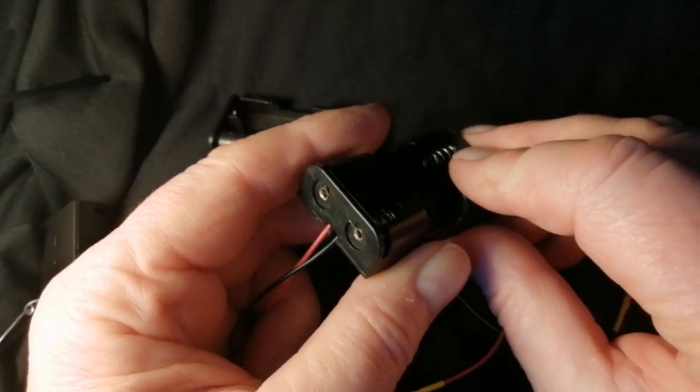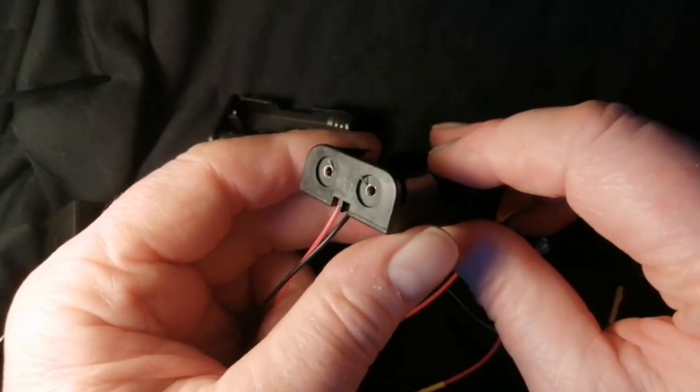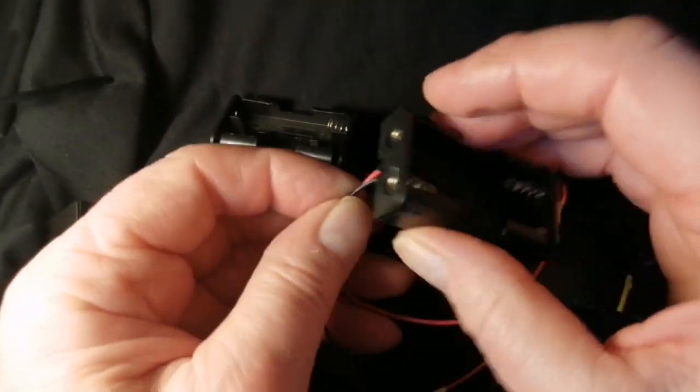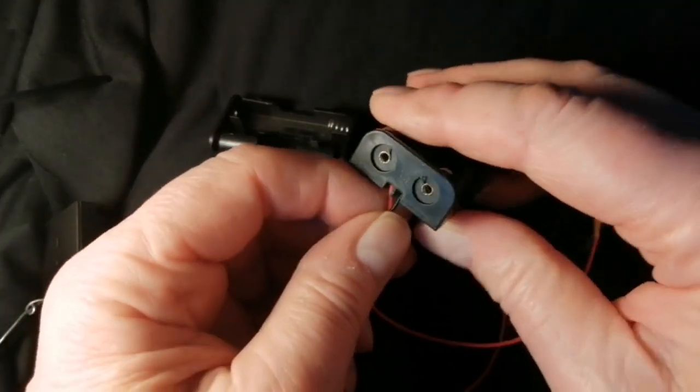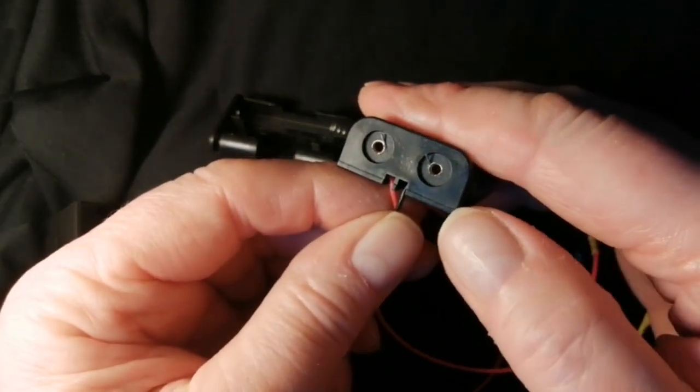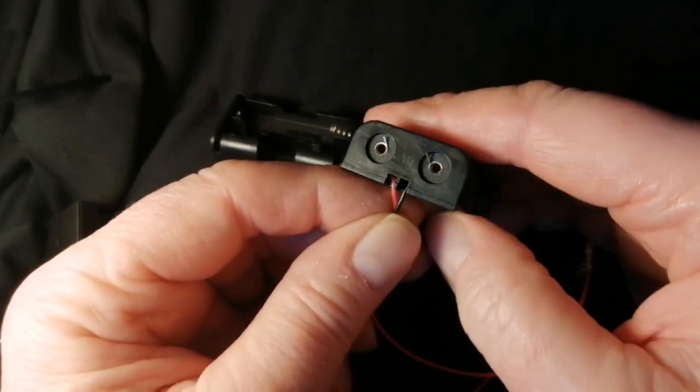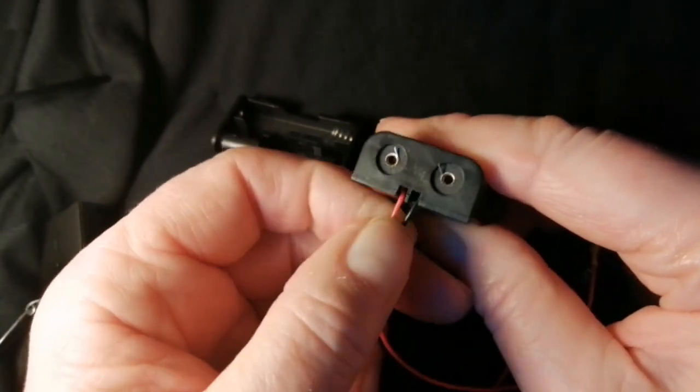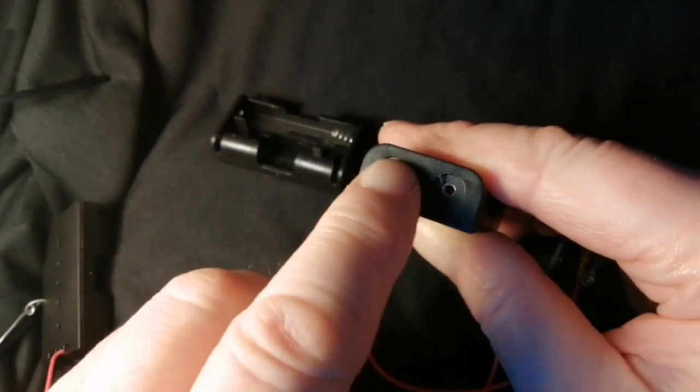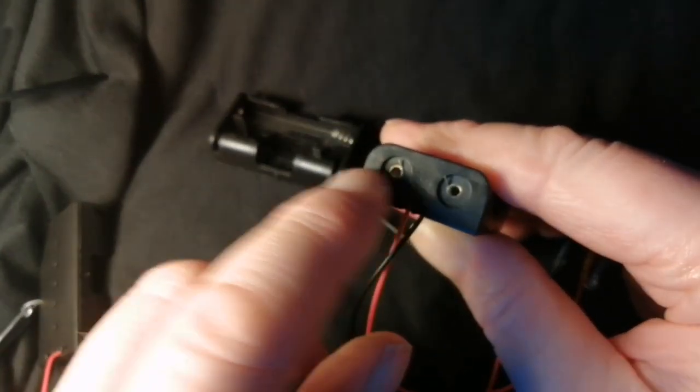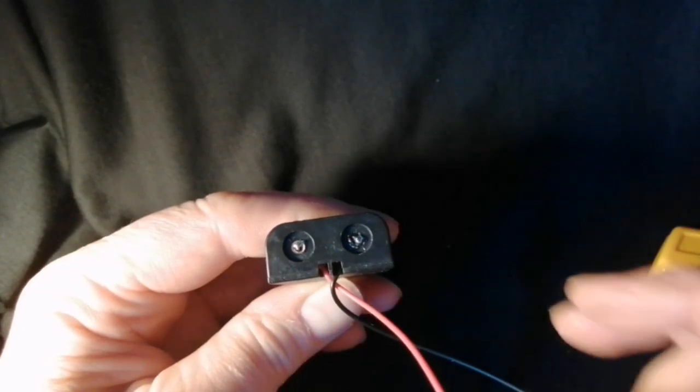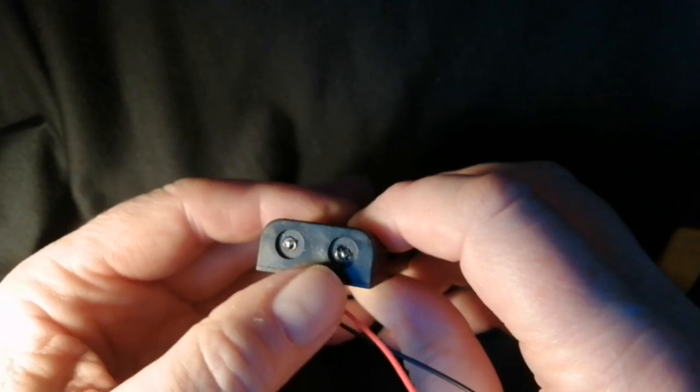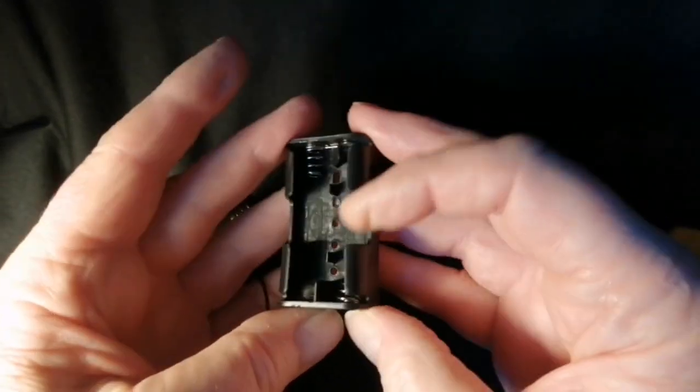Now these are just cheap rubbish eBay battery holders, very cheap, and the wires come in and they're just squashed in. They're not soldered, they're just squashed into place. I don't think those are going to be very reliable so I am going to solder those connections. That was probably a stupid idea because this plastic melts like snow in the sunshine but it is okay.